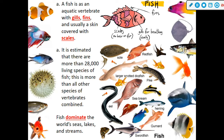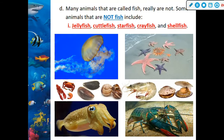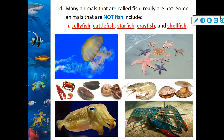Fish dominate the world's seas, lakes, and streams. Many animals called 'fish' are not really fish — jellyfish, starfish, crawfish, and shellfish are invertebrates. Shellfish is not even a single species; it's a group of crustaceans or invertebrates.